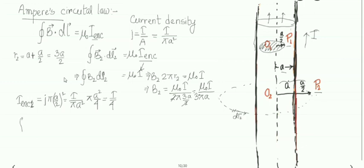Applying Ampere's circuital law for B1, the magnetic field at point P1 on the Amperian loop of radius r1 = a/2: the closed integral of B1·dl1 = μ₀ × I_enclosed = μ₀ × I/4. Again, the magnetic field is tangential and parallel to dl1, so cos(0°) = 1. By symmetry, B1 is constant on the loop and can be taken outside the integral, giving B1 × 2πr1 = μ₀I/4.